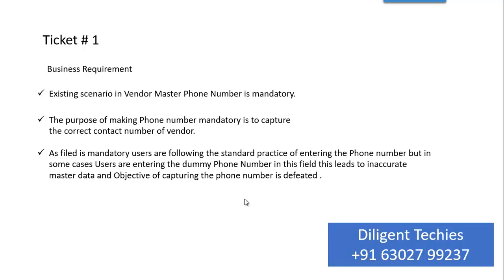Hope you understand the whole issue. Let us summarize. We have the vendor master. In vendor master, the phone number field is there and it is mandatory. But users are entering the wrong phone number. Instead of asking the vendor, if they don't find the phone number of the vendor, they will enter some dummy number.